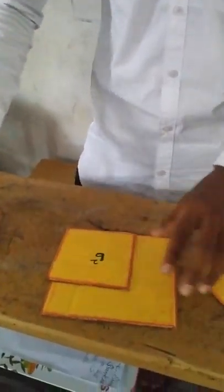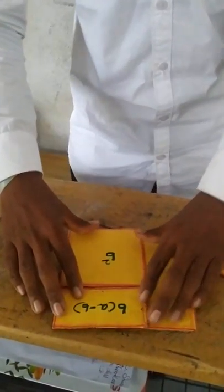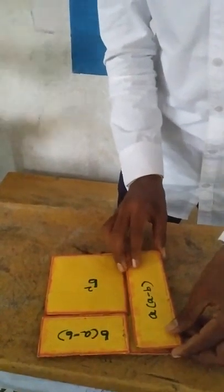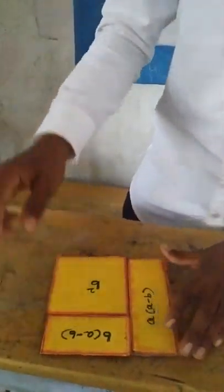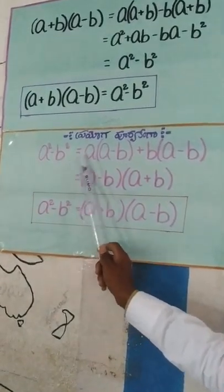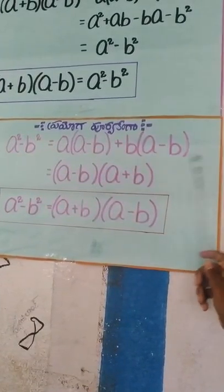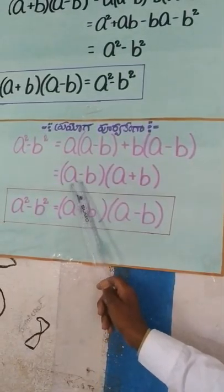A square minus B square is equal to A into A minus B plus B into A minus B. A minus B, A minus B common.